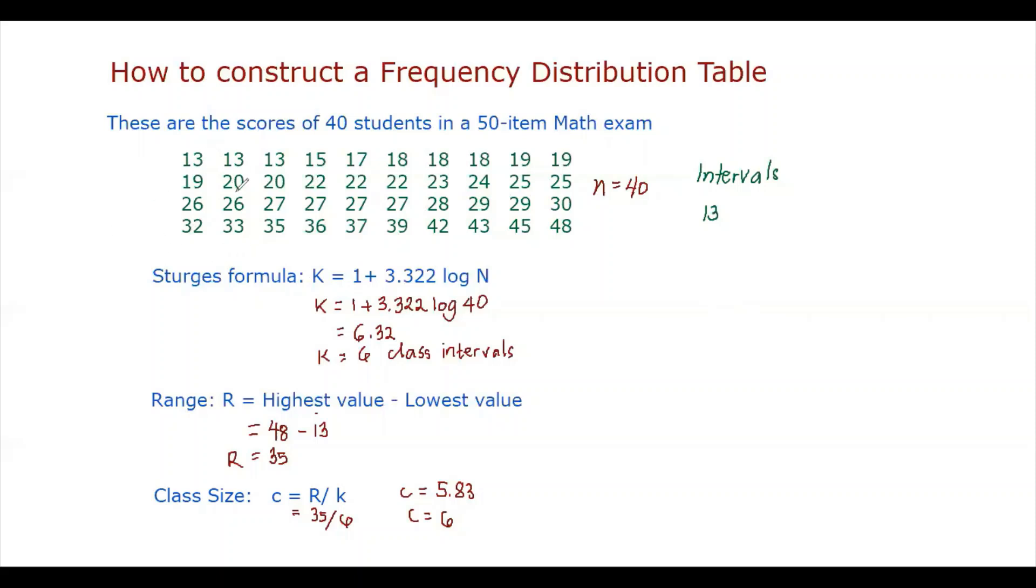Now to find the other lower class limits, we're going to add the class size to the previous lower class limits. So 13 plus 6 is 19, 19 plus 6 is 25, plus 6 is 31, plus 6 is 37, plus 6 is 43. So we only have 6 class intervals.